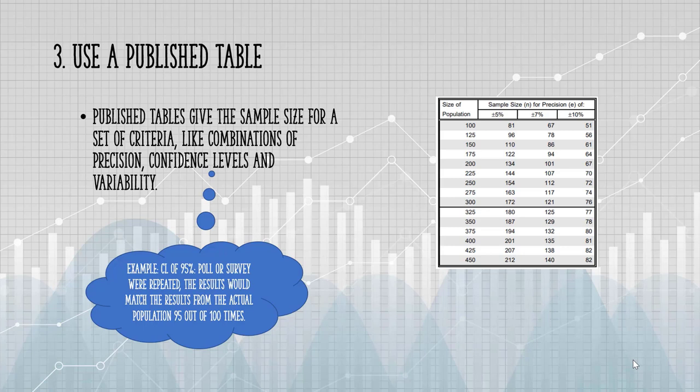Using this table, if you had a population of 400 and you wanted a 5% margin of error, you would need to survey 201 people.